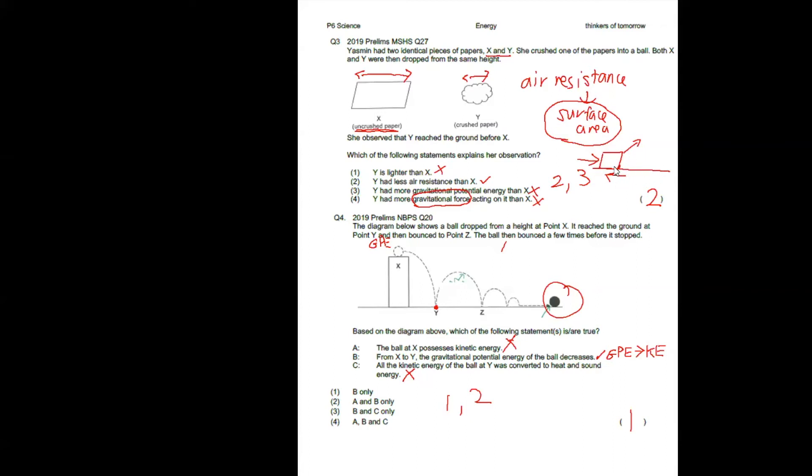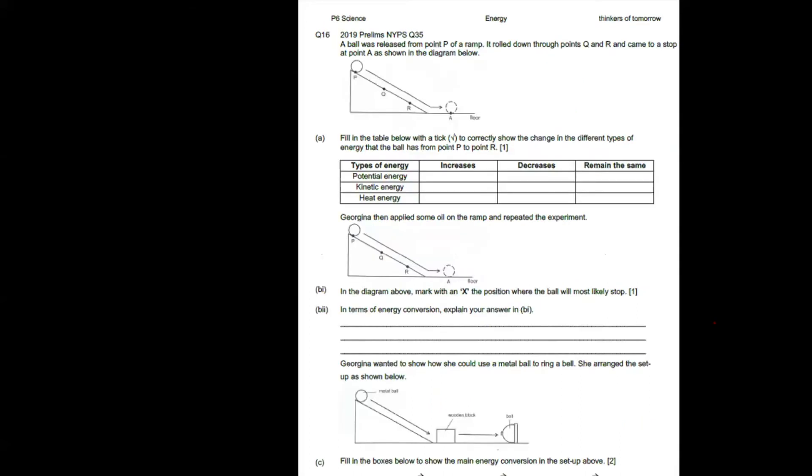When something is pushed along the solid surfaces, no change in frictional force. So a ball was released from point P of a ramp. It rolled down through point Q and R and came to a stop at point A, as shown in the diagram below.